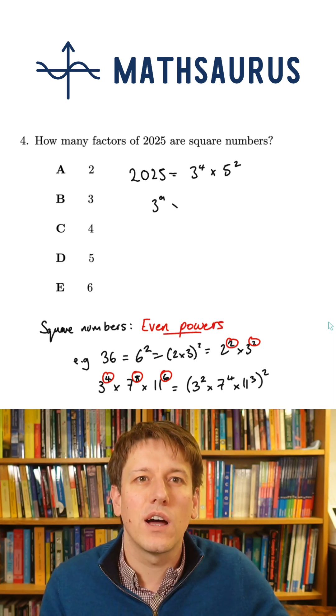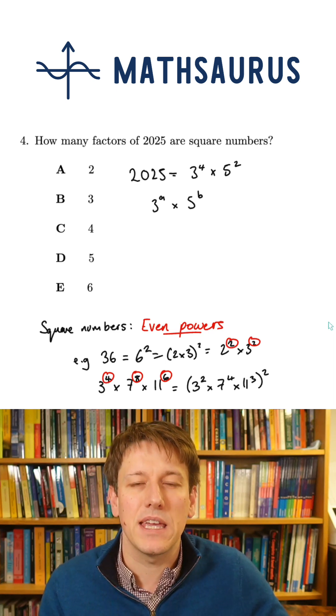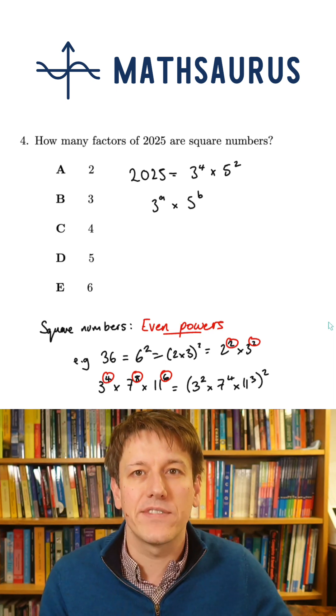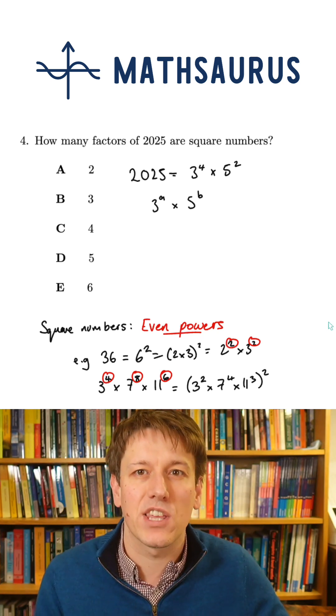So we're looking for values of a and b such that 3 to the a times 5 to the b is a square number. For this, our a and b have to be even numbers. And for it to be a factor of 2025, a has to be less than or equal to 4,